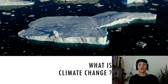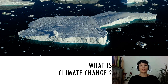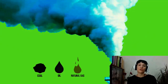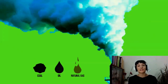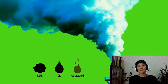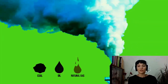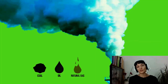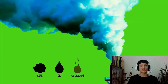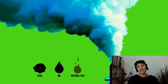First of all, what's climate change? Climate change is a large-scale long shift in the planet's weather. It's also referred to as global warming. The largest human influence has been the emission of greenhouse gases such as carbon dioxide, methane and nitrous oxide. Human activity since the industrial revolution has increased the amount of greenhouse gases in the atmosphere, in particular from the burning of fossil fuels such as coal, oil and natural gas.